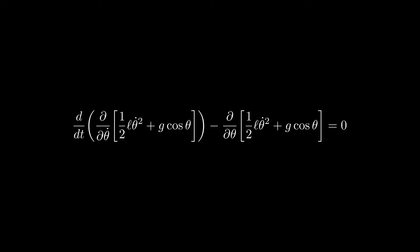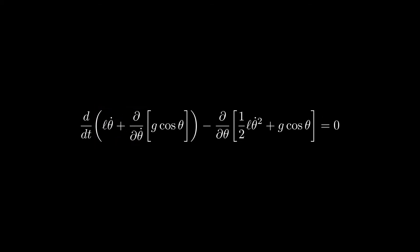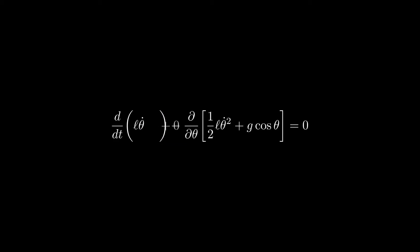The first derivative we're going to do is with respect to theta dot, and the argument is theta dot, so we can just use the power rule. The next derivative is of g cosine theta with respect to theta dot. Because g cosine theta doesn't have any theta dots in it, this derivative is just zero.